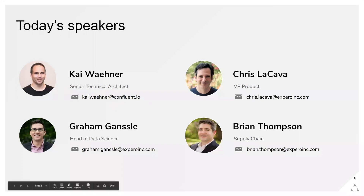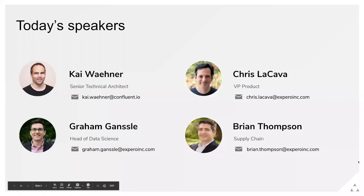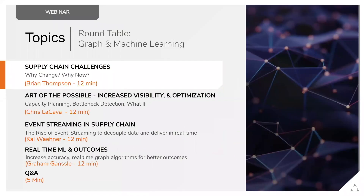Hi, everybody. We have a few folks today and we're going to do a little bit of a roundtable. I'm with the Xperia team, and I'm going to talk about some of the challenges we're running into in the supply chain space. Then we'll talk with the remainder of the folks for about 15 minutes each to give insights into where they've applied various technologies against these challenges. We'll discuss the challenges, do a demonstration of visualizations, talk about Confluent and event streaming capabilities, and then discuss the data science used in pulling these solutions together.